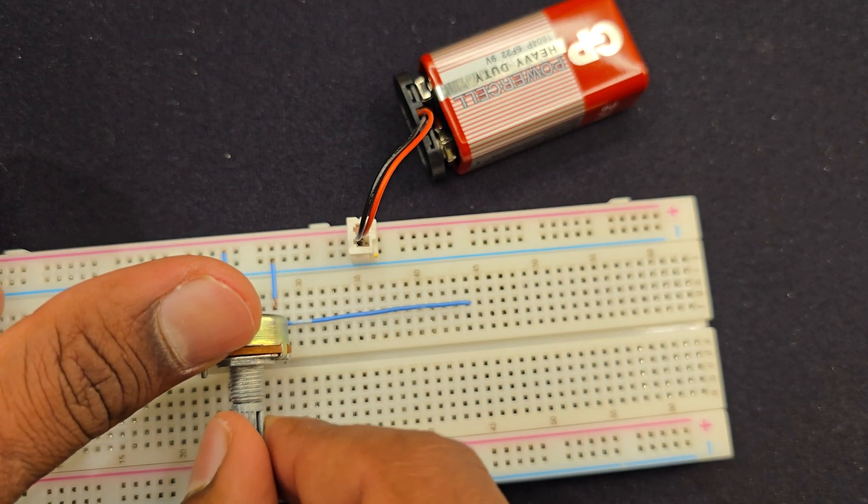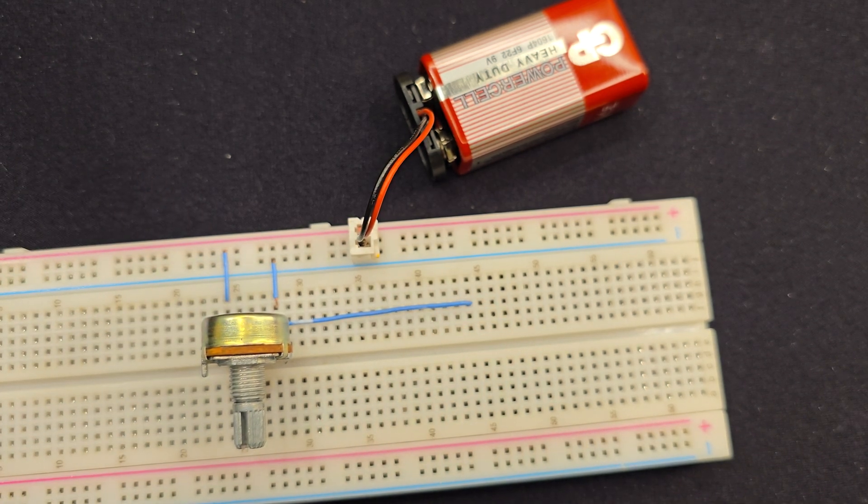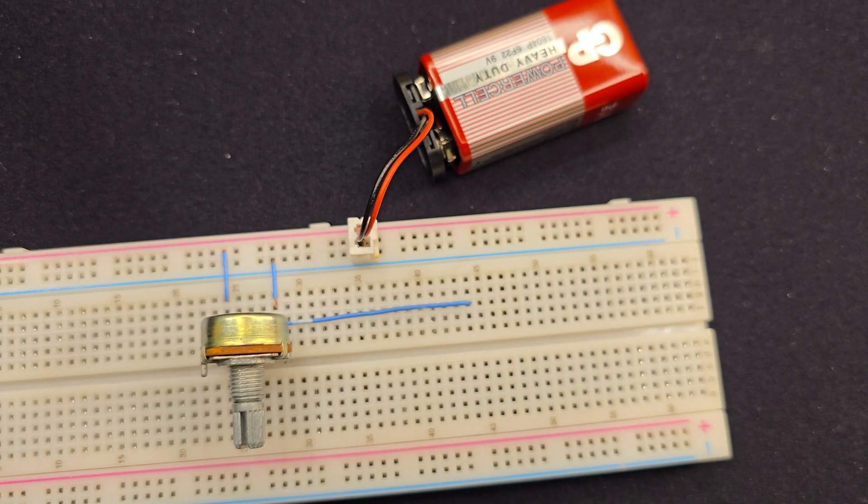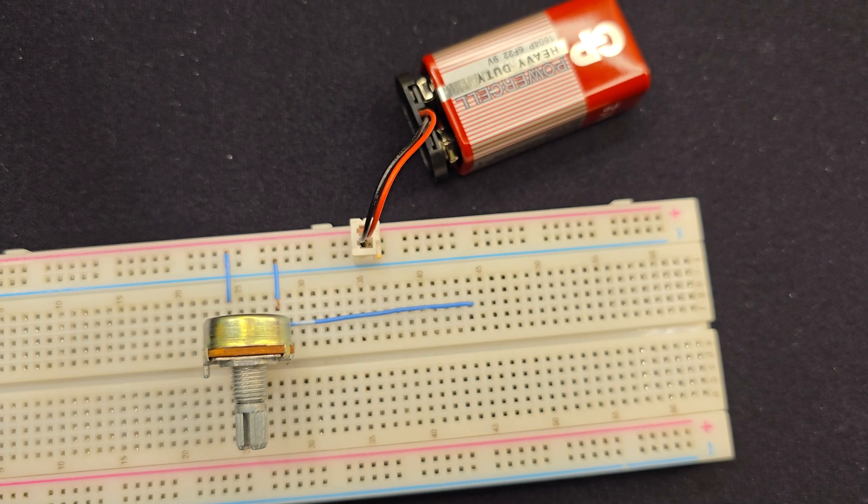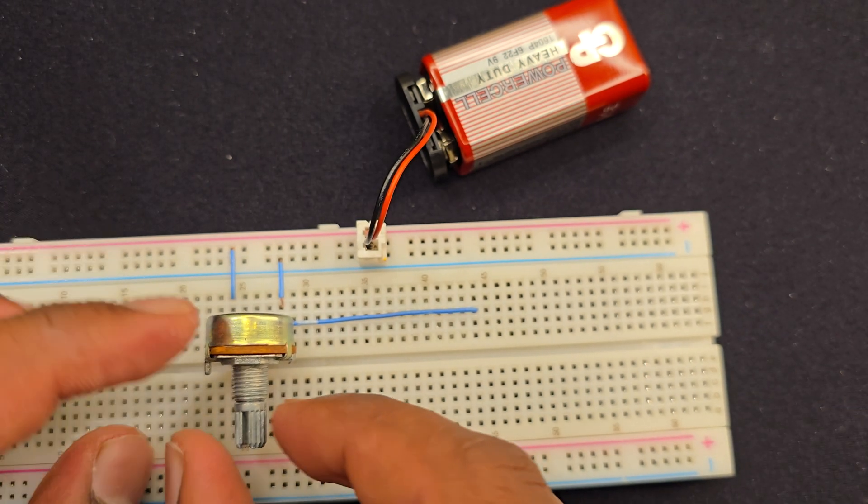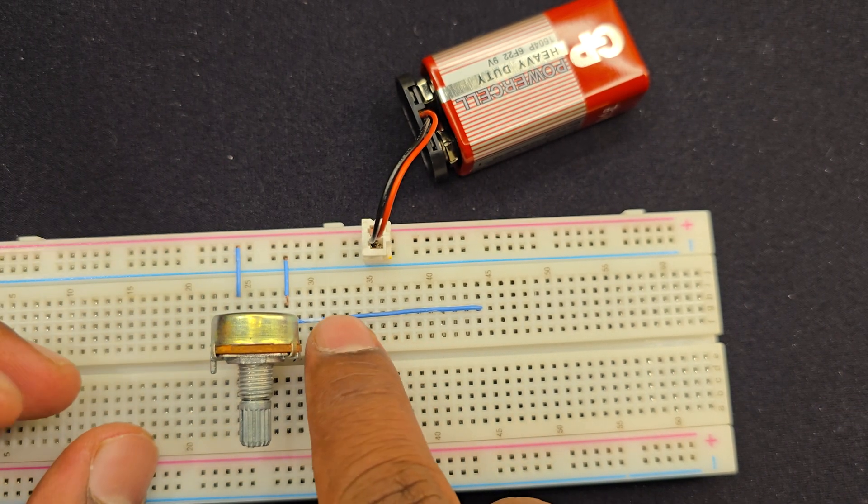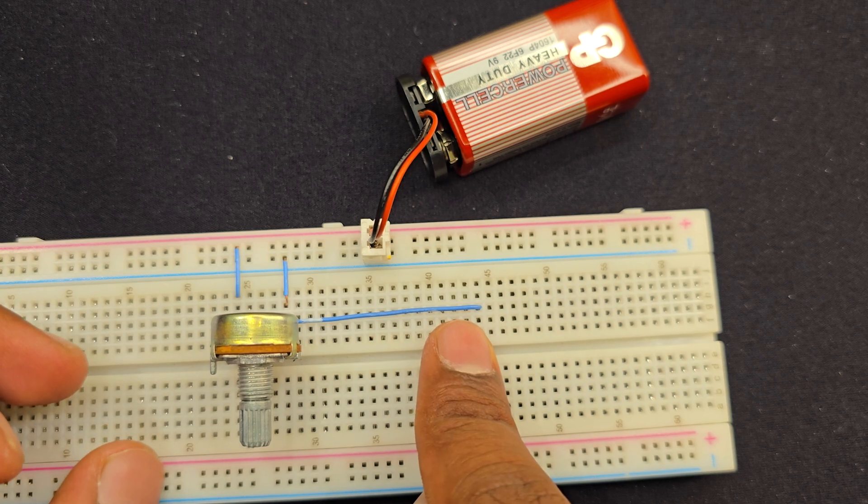So whenever I turn this knob, the voltage at this point will change. It is explained in the previous video. If you guys want to watch that video, just go and check it out. Then you will get a great understanding. So basically, whenever I turn this knob left to right, the output voltage changes from 0 to 9 volts.